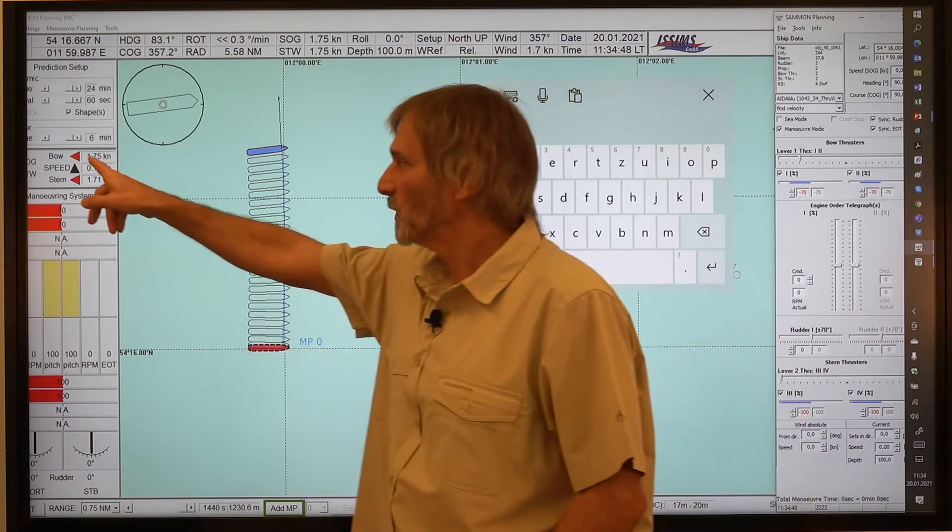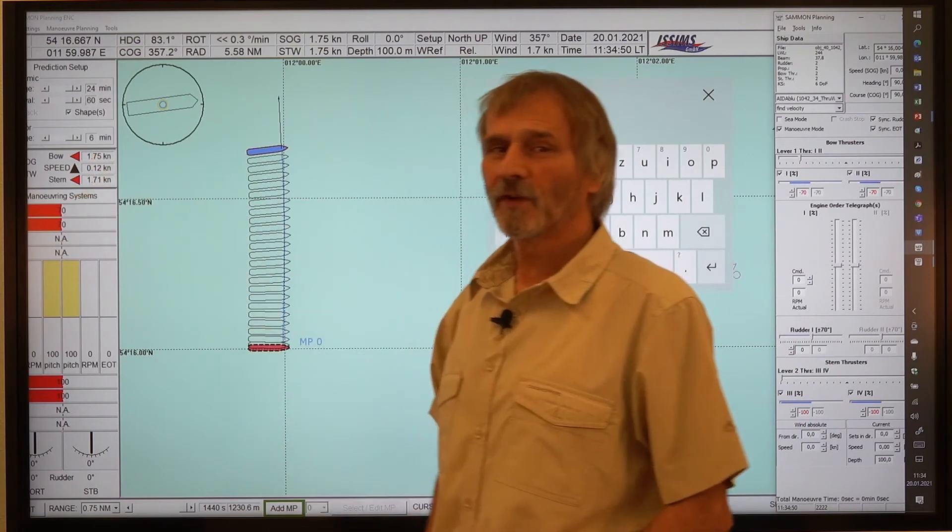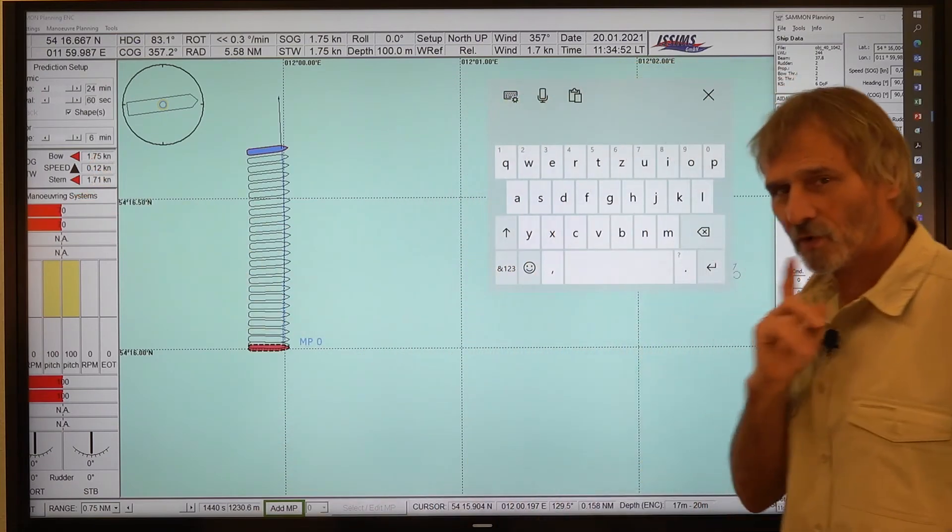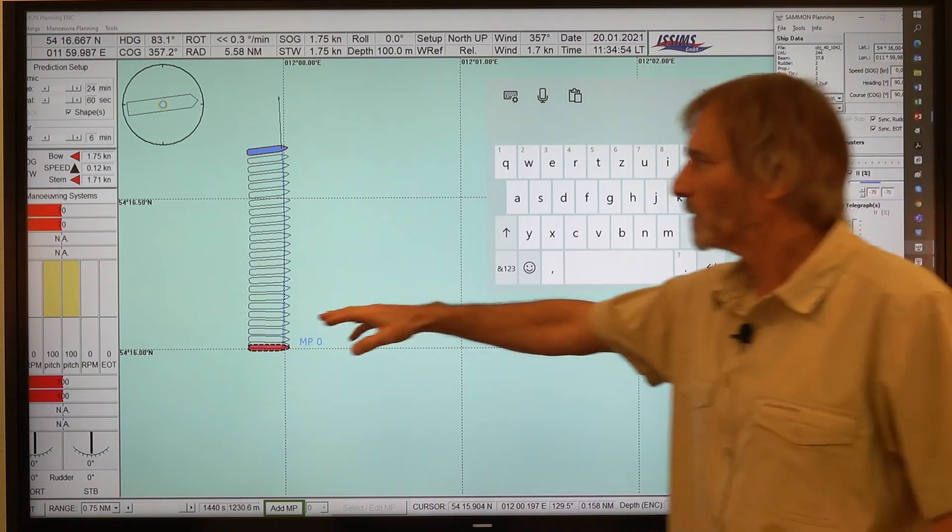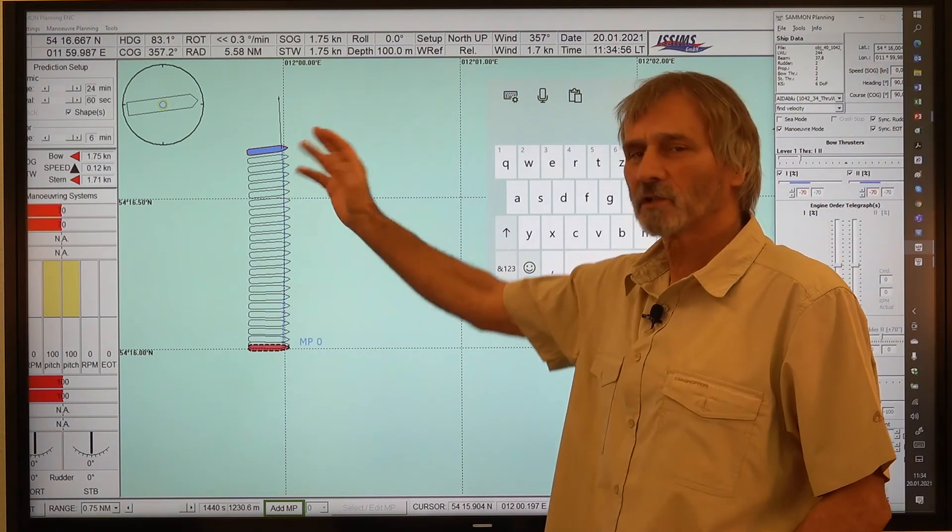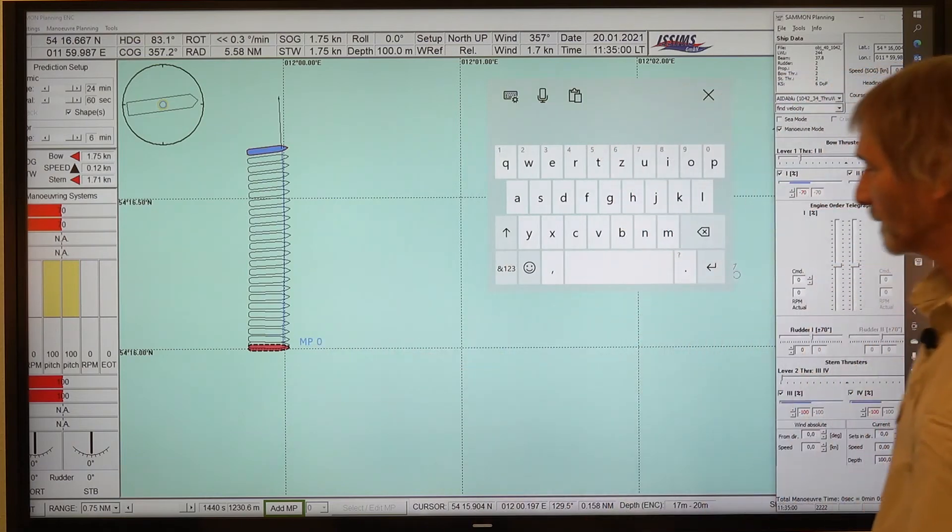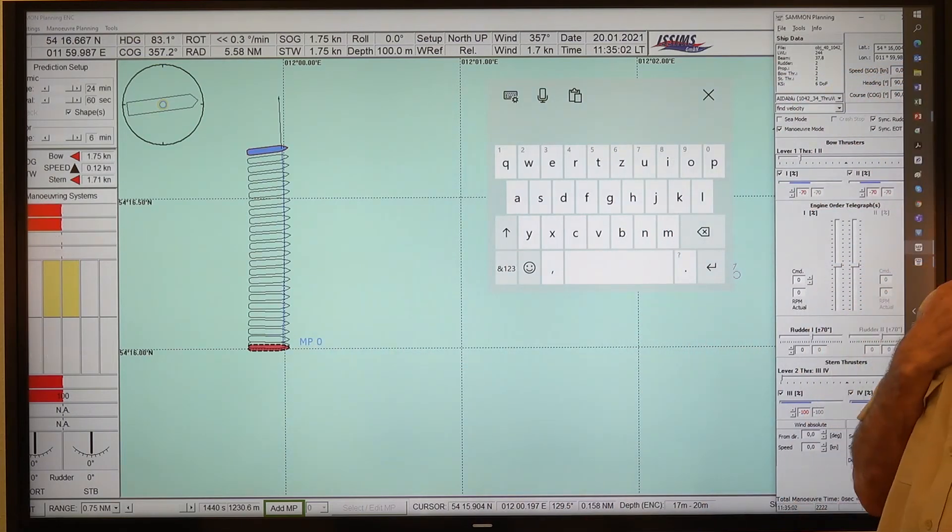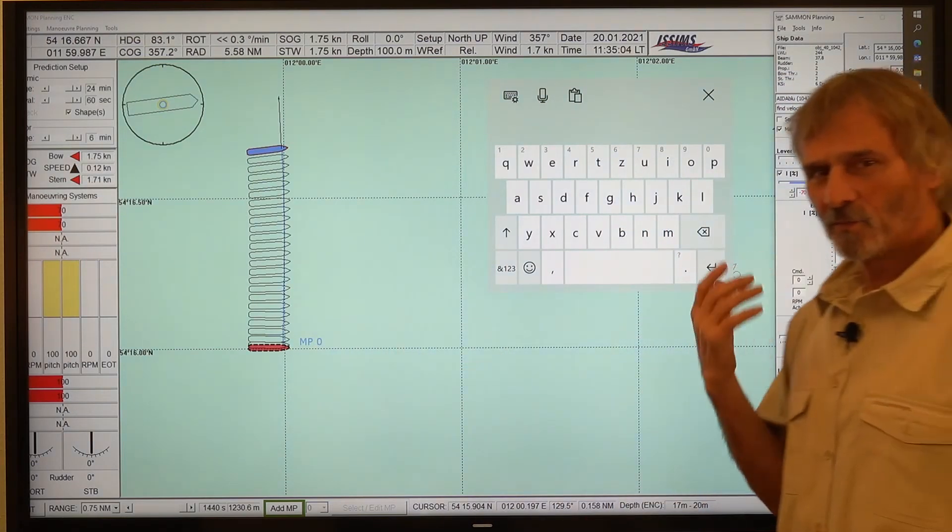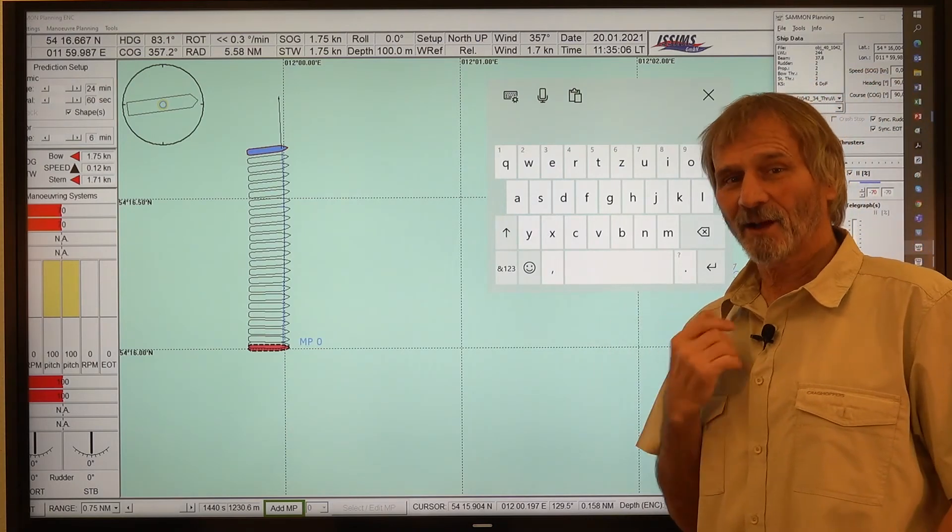And the transfer speed is 1.75 knots. So this is important. 1.75 knots. The bow is a little bit faster than the stern as we can see here. But what can we do with this? So we go again back in our diagram.